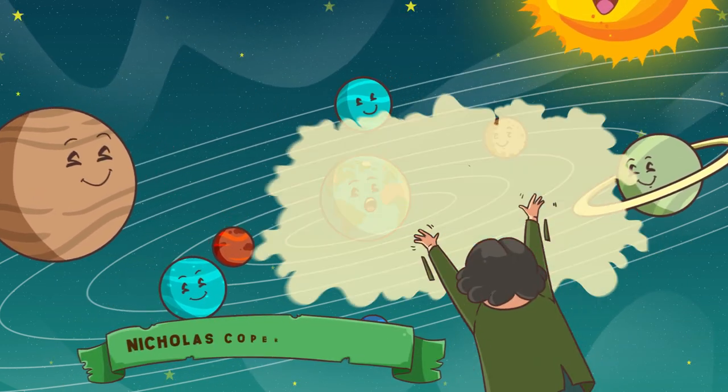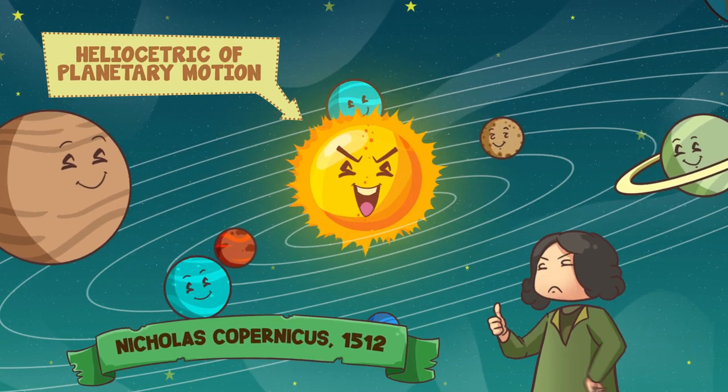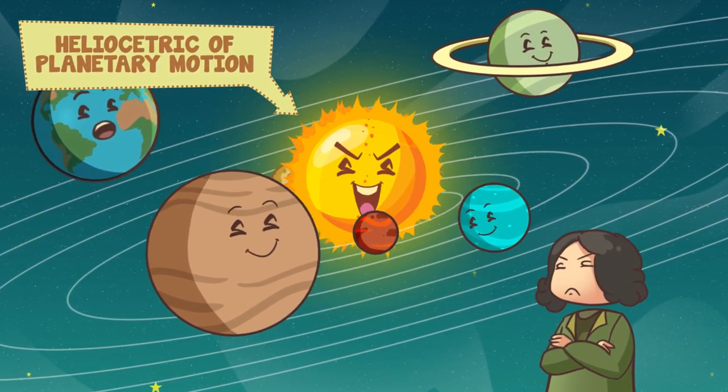In 1512, Nicholas Copernicus put forward his heliocentric theory of planetary motion, which asserted that the Sun is motionless at the center of the solar system with the planets revolving around it.